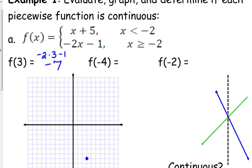Now for f of negative 4. Negative 4 is less than negative 2, so we're going to plug that into the first function. So negative 4 plus 5 is 1. So we have the point negative 4, positive 1 that we can plot on our graph.